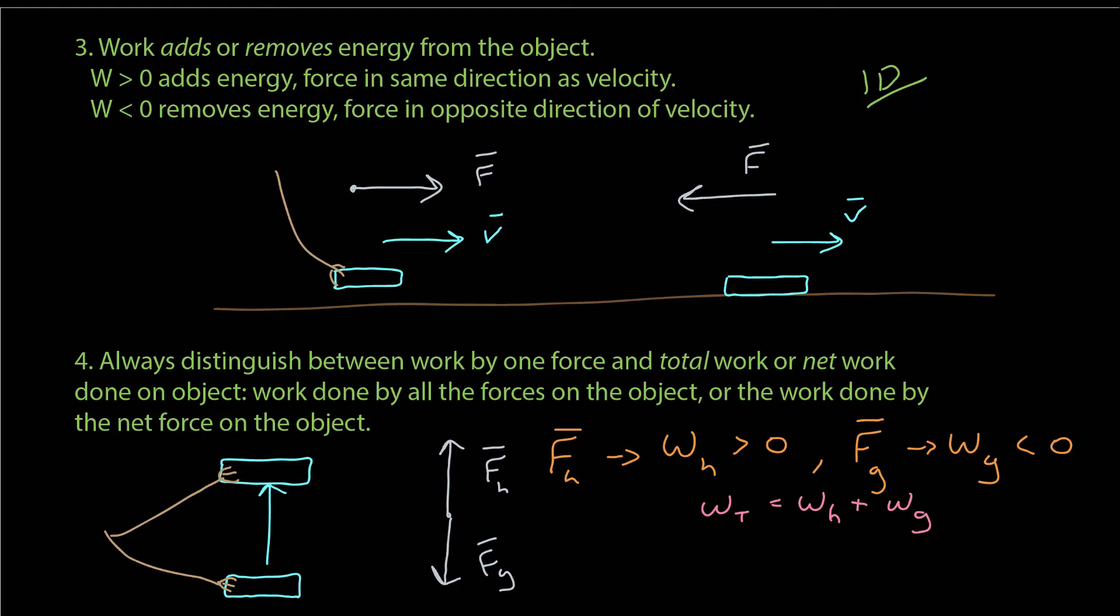Another way to do this is that you can find the total force or net force, which is the vector sum of the contact force of the hand and the gravitational force, and then find the work done by that net force. And that will also give you the total or net work on the system. Now, we just need to know how to calculate that work, and that comes up next.